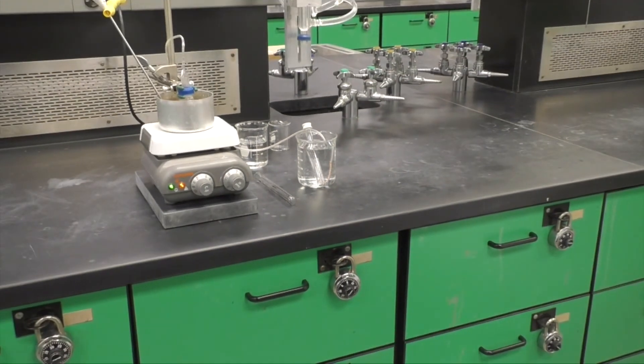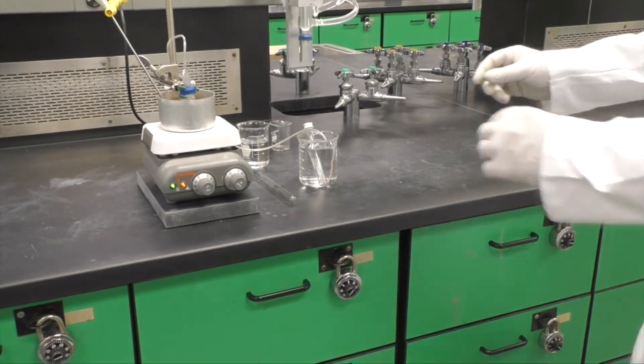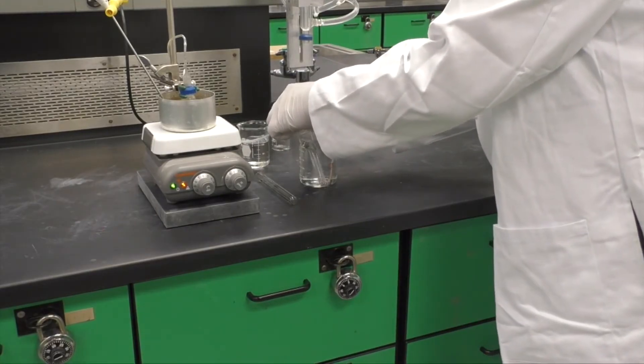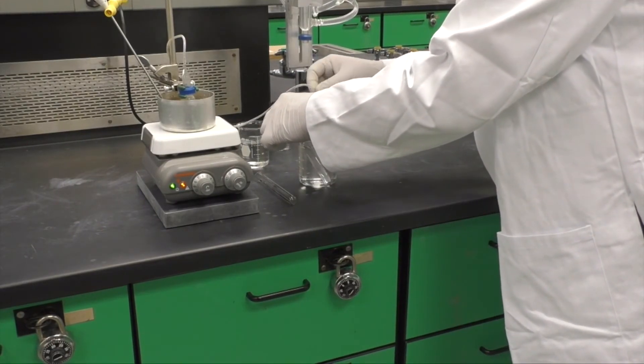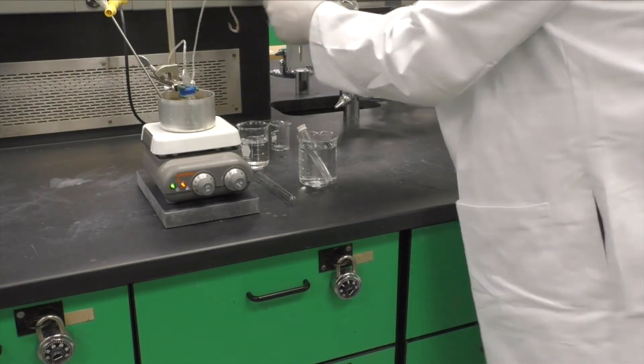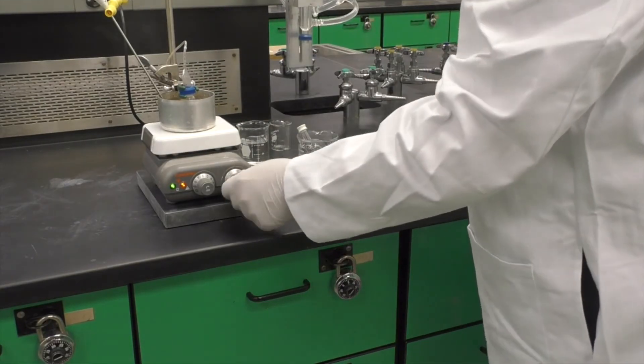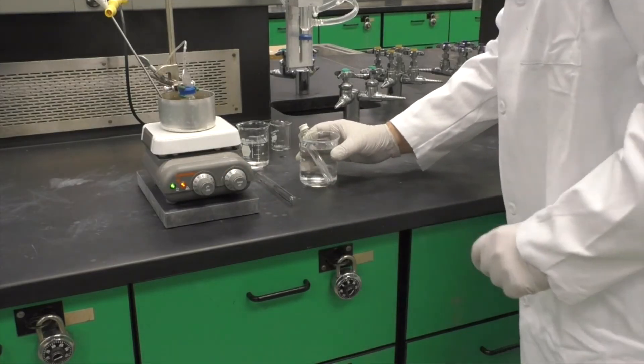Carefully lift the gas collection tube just high enough to remove the Tygon tubing before turning off the heating and stirring. If you stop the reaction before removing the tubing, water will rush into the gas collection tube and you'll have no product.